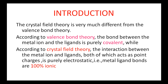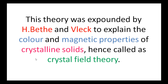According to Valence Bond Theory, the bond between metal and ligand is formed by the sharing of electrons. But according to Crystal Field Theory, the bond between metal and ligand is formed by the transfer of electrons, which is a 100% ionic bond. This theory was expounded by H. Bethe and Bleck to explain mainly the color and magnetic properties of crystalline solids. Hence, it is named as Crystal Field Theory.